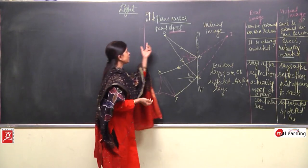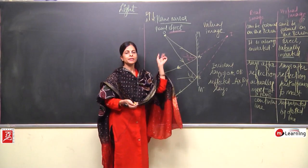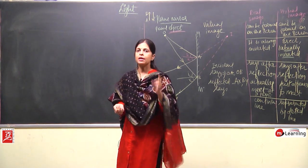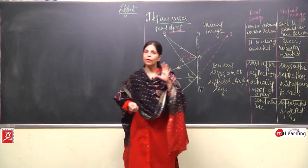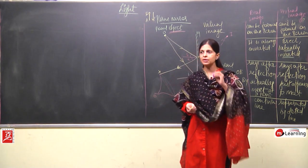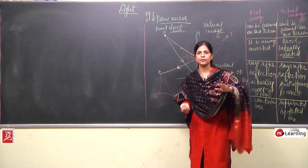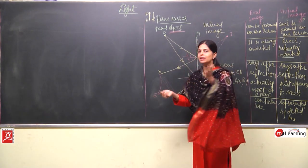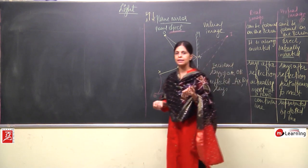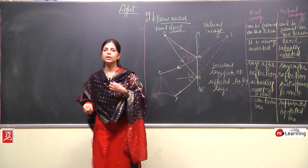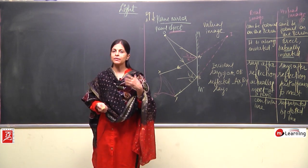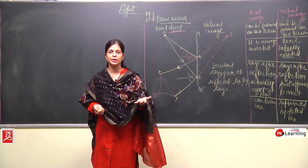Here we have taken the example of a point object, now we will be taking an example of an extended object. The reason we need to take the example of an extended object is because in practical life, whatever things we see around us are not of point size — they are all very big, very huge objects. That is why we call them extended objects.